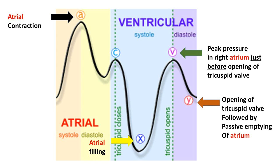After the atrium contracts, the atrium gets filled from the internal jugular vein into the atrium. During this phase, there will be a flow of blood from the jugular venous system into the right atrium, producing the X descent. As the atrium keeps on filling, the descent gradually reverses into an ascent. When the pressure is maximum — the peak pressure in the right atrium — it produces a smaller positive deflection compared to the A wave, called the V wave. Once this is reached, the tricuspid valve opens and emptying of blood happens into the right ventricle, causing the Y descent, which is not as deep as the X descent.